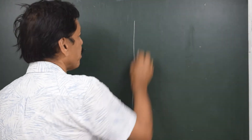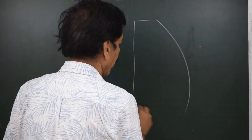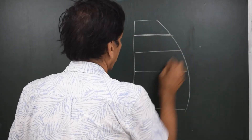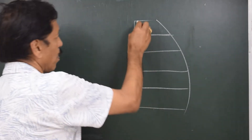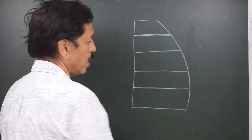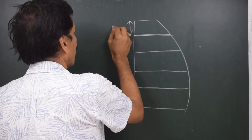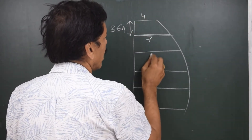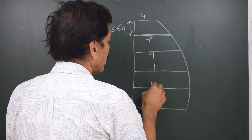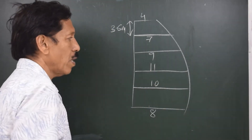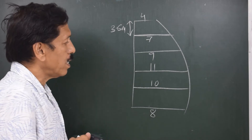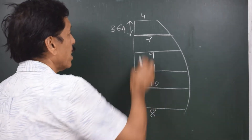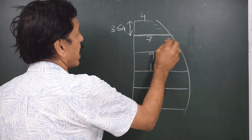Let us say we have a bulkhead which has got five segments, meaning the number of ordinates are one, two, three, four, five, six, and each segment is 3.6 meters. The ordinate values are four, seven, nine, eleven, ten, and eight meters. We want to find out the area — this being the end bulkhead of a tank, filled up to a certain level.